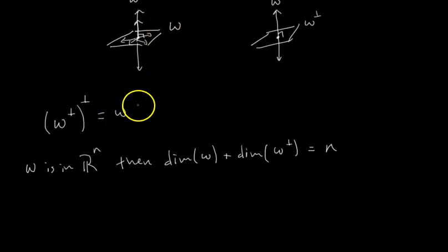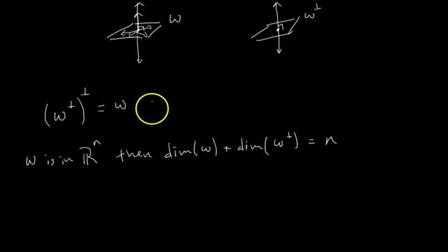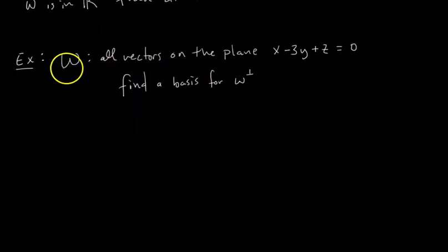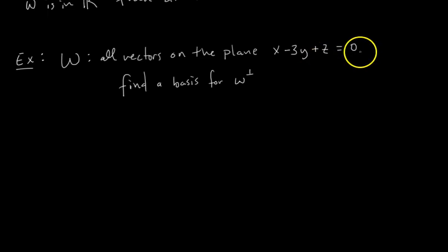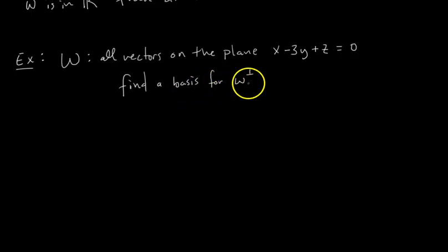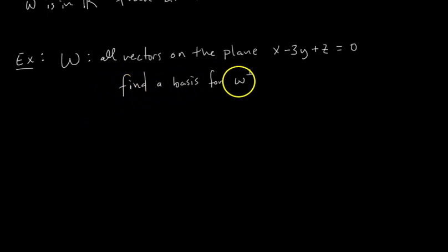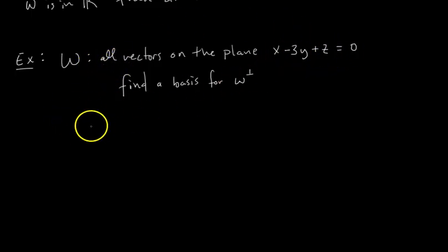Those are the two theorems. Now let's do a quick example. We have the subspace W defined as all vectors on the plane x minus 3y plus z equals 0, and we need to find a basis for W perp. To find a basis for W perp, we first need to find a basis for W.